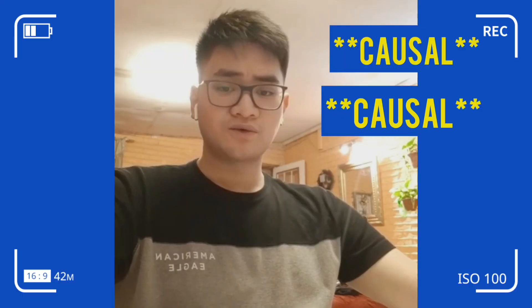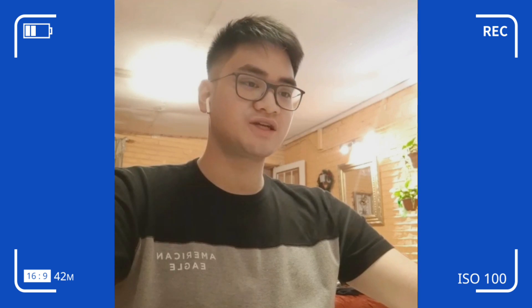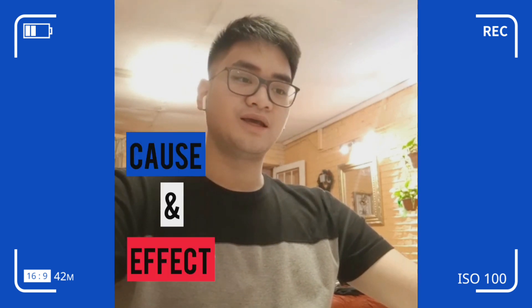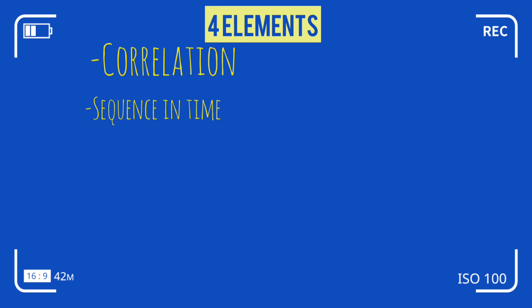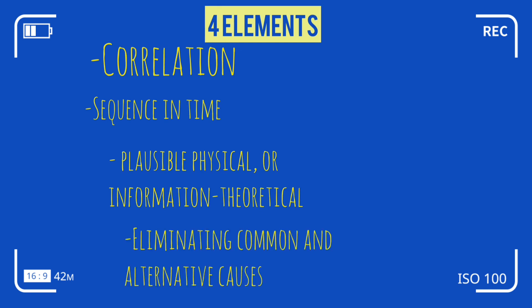Hello and good morning, we are Group 8 and our topic for today is introduction to causal analysis. Causal analysis is a field of experimental design and statistics pertaining to establishing cause and effect. It typically involves establishing four elements: correlation, sequence in time, a plausible physical or information-theoretical mechanism for an observed effect to follow from a possible cause, and eliminating the possibility of common and alternative causes. Such analysis usually involves one or more artificial or natural experiments.